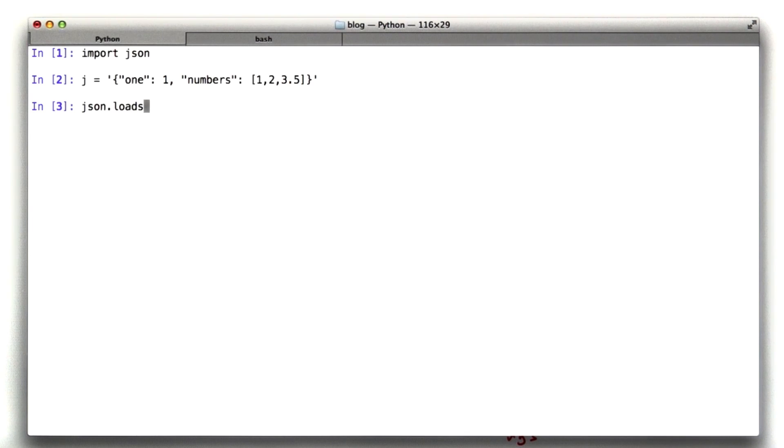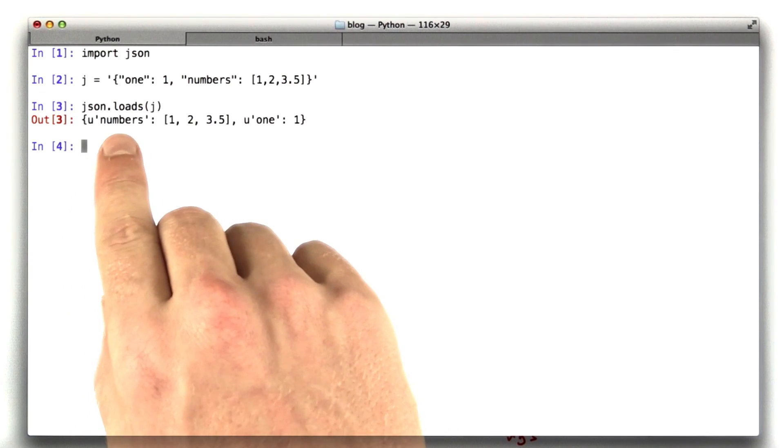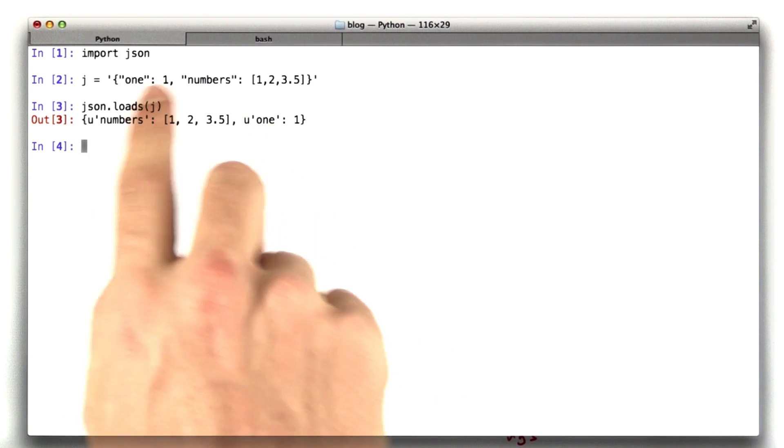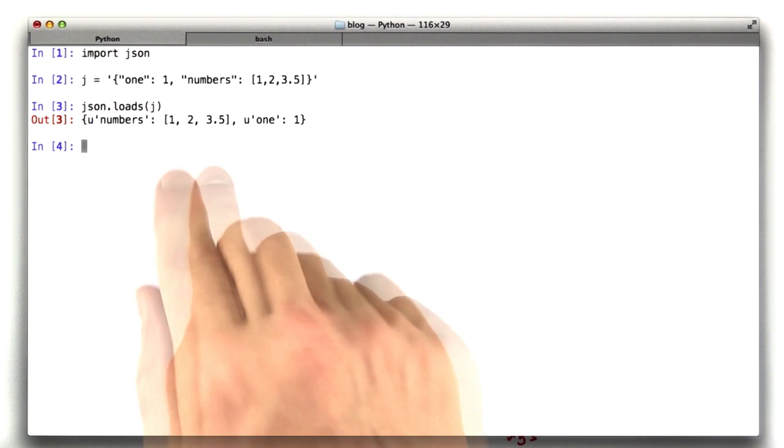Let's parse that in JSON. We use the function loadS, which basically stands for loadString. There's also load, but that expects a file. In this case we're going to be using just loadS. When we run that, we get back a Python dictionary with our same keys, numbers and 1. The order doesn't matter in Python dictionaries. And our same values, 1, and 1, 2, and 3.5.